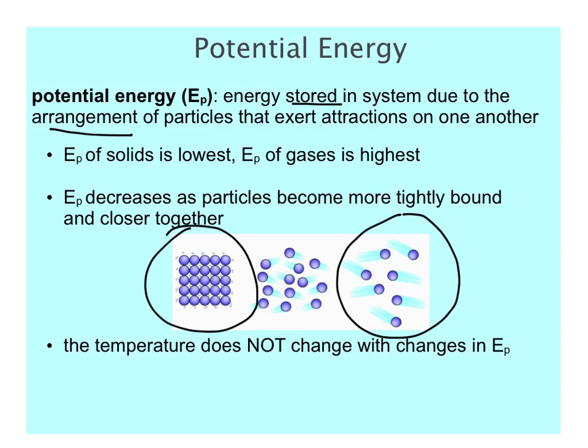As you go through phase changes, potential energy is going to change. Going from a gas to a liquid, for example, there would be a decrease as particles become closer together and more tightly bound. Importantly, any time there is a change in potential energy, there won't be a change in kinetic energy — or temperature.